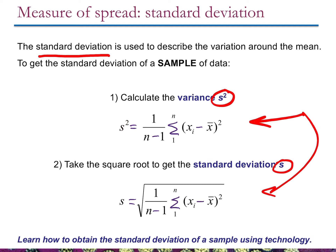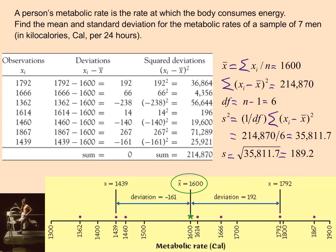The standard deviation is one step further: we simply take the square root of the variance to get S. So the variance calculation gives us S-squared, and taking the square root gives us S, the standard deviation. This is pretty straightforward. We're going to look at an example now with a real data set.